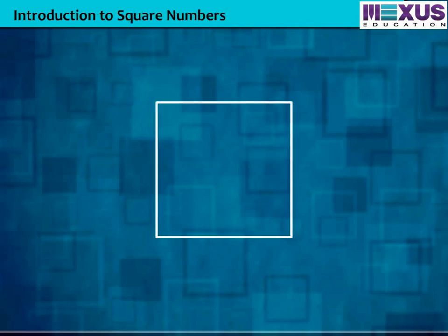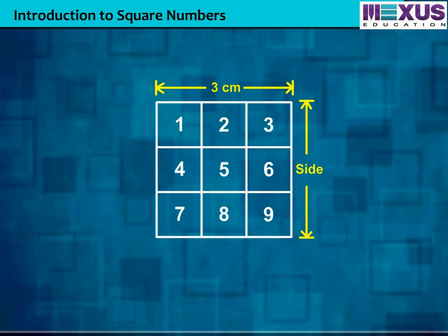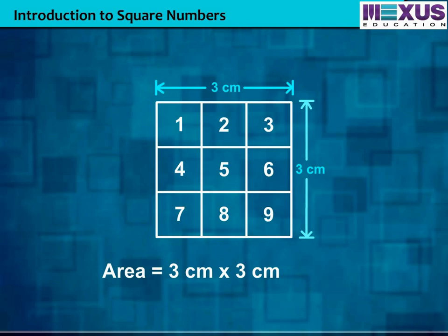Look at this square. What is the area of this square? We all know the area of a square is side times side. For example, one side of the square is given as 3 cm, then the other side would also be 3 cm. So the area can be calculated by multiplying 3 cm into 3 cm, giving us 9 cm square. Thus, this area number which we got is called the Square Numbers.